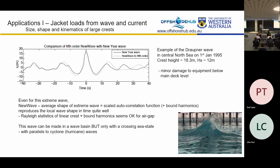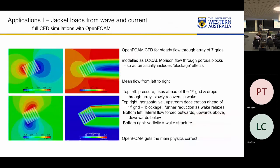The Draupner wave record is unambiguous because there was some minor structural damage associated with it. Going back to loads on the jacket structure: the flow through the jacket is modified by the jacket's presence — a blockage effect. If you use the undisturbed kinematics you don't get a good estimate of the load.